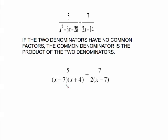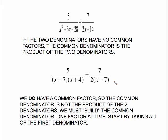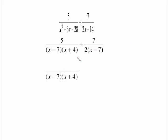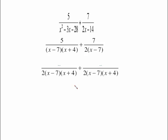Now look at these denominators — do they have a common factor? Yes, they both have an (x − 7) in them. That means we can't use the product rule. We have to build the common denominator one factor at a time. Start by taking all of the first denominator, then go to the other denominator factor by factor. We have a 2 — that needs to be part of the common denominator. We already have (x − 7), so we're good there.